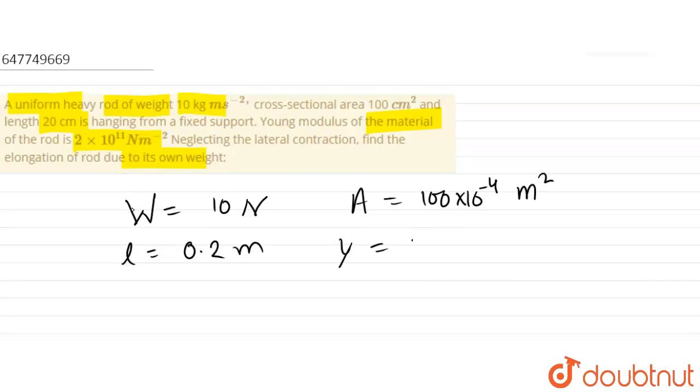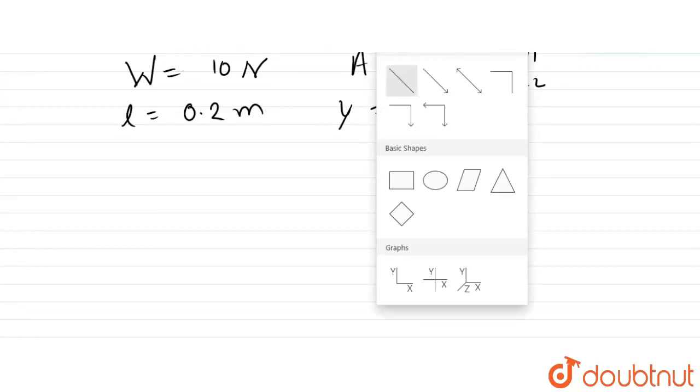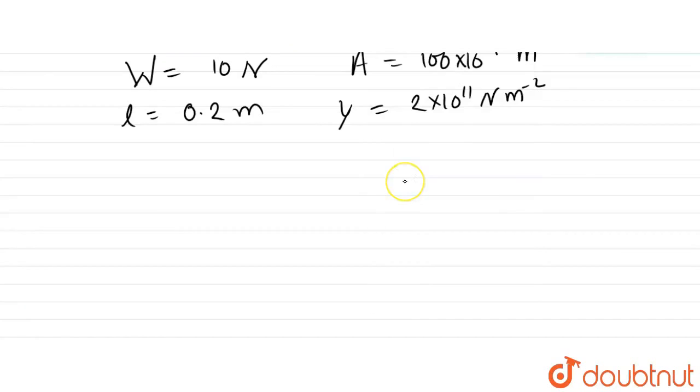Young's modulus is given as 2×10^11 N/m². We need to find the elongation of the rod. Now, for this rod suspended from the top, at different points along its height, the elongation will vary. At the bottom, the load is zero, so elongation is zero.